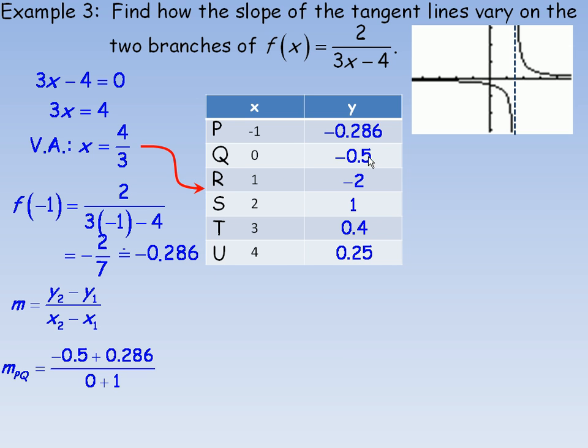So to find the slope of the line segment between p and q, I would go negative 0.5 minus 0.286. So negative 0.5, now minus negative is the same as adding 0.286, over 0 minus negative 1, which is the same as 0 plus 1. And so that simplifies to negative 0.214. I'll generalize here after I do all my slopes. So now I want to do q to r. And I'm going to put the slopes beside the table here. There's my negative 0.214. It kind of looks like the same place you'd put the first differences in the table, but I'm putting it between because it shows between points p and q.